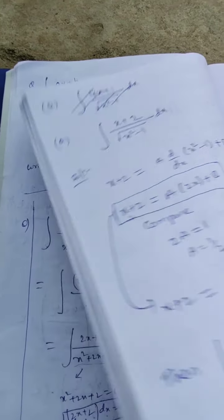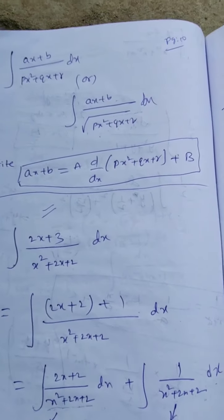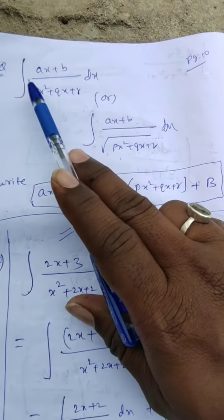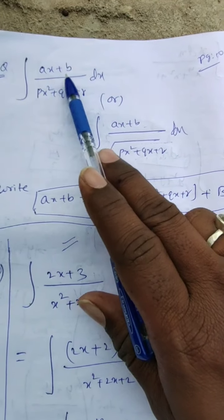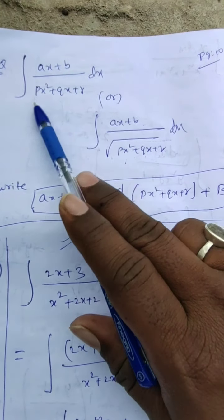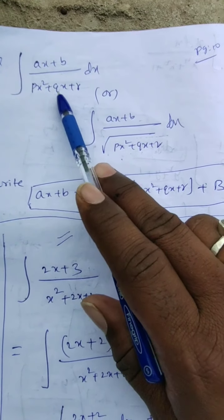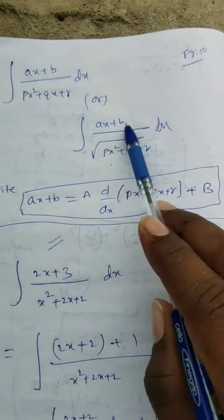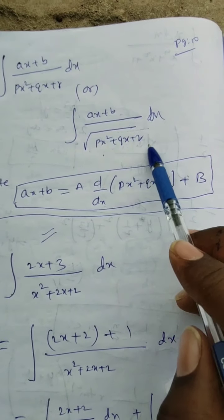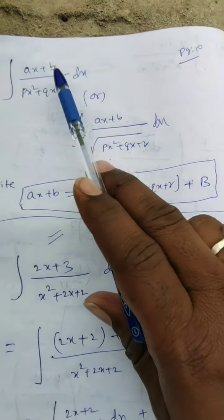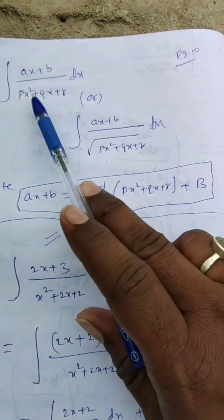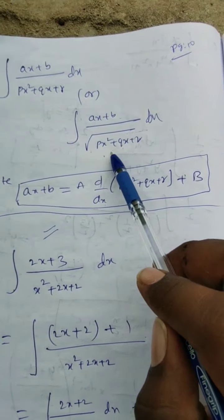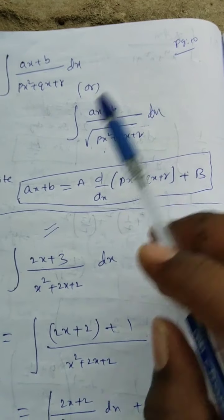You know I have given you a formula — you remember — these are the formulas I gave you yesterday: integration of (ax + b) upon (px² + qx + r), or (ax + b) upon under root of (px² + qx + r) dx.